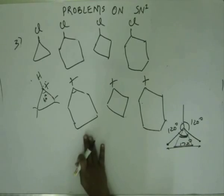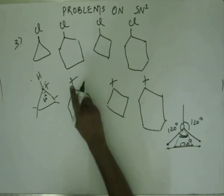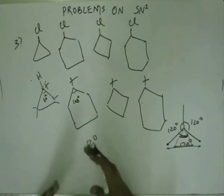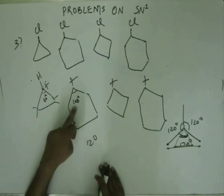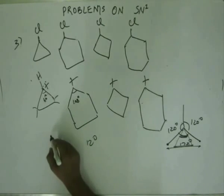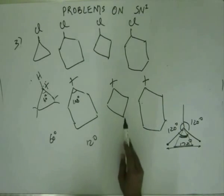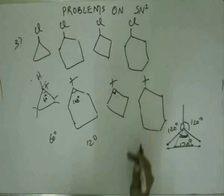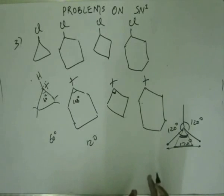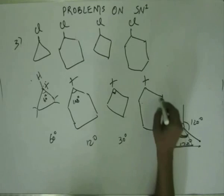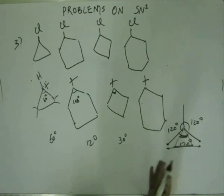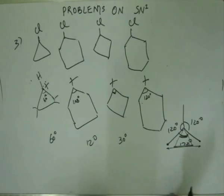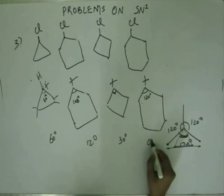The internal angle of a five-membered ring is 108 degrees. So the angle strain here is 12 degrees — what was supposed to be 120 degrees is now 108 degrees. For the three-membered ring, there is a strain of 60 degrees. For the four-membered ring, if we consider it as a regular four-membered ring, the angle will be 90 degrees. What was supposed to be 120 degrees is 90 degrees, so the strain is 30 degrees. Now if we consider a regular six-membered ring, the internal angle is 120 degrees. What was supposed to be 120 is actually 120, so there is a strain of 0 degrees.